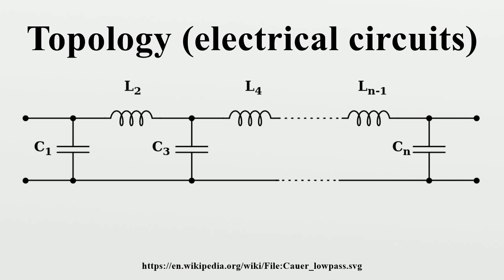Circuits containing components with three or more terminals greatly increase the number of possible topologies. Conversely, the number of different circuits represented by a topology diminishes, and in many cases the circuit is easily recognizable from the topology even when specific components are not identified. With more complex circuits, the description may proceed by specification of a transfer function between the ports of the network rather than the topology of the components.